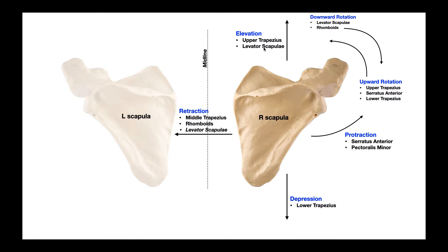The first two movements are the easiest to understand: elevation and depression. Elevation is a superior glide of the scapula — what you do when you shrug your shoulders up, or perform a shrugging exercise in the gym. Scapular elevation is controlled mainly by two muscles: the most important is the upper trapezius, which is by far the strongest, and the smaller levator scapulae also contributes, though the upper trapezius contributes much more.